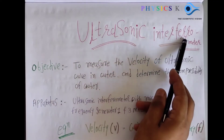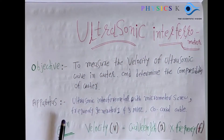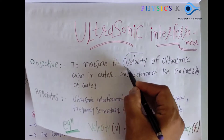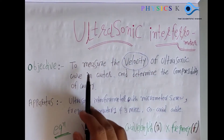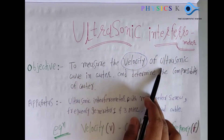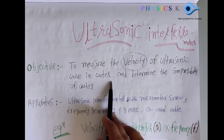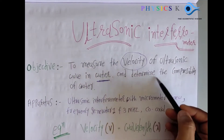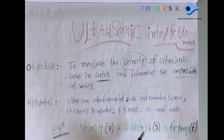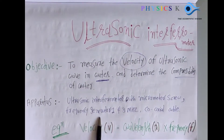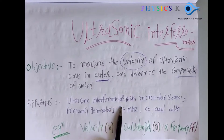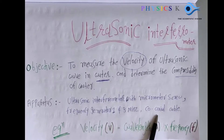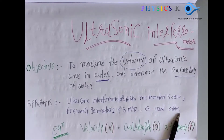The title is ultrasonic interferometer. Our objective is basically to measure the velocity of ultrasonic waves in water — that's why I filled water in this instrument — and to determine the compressibility of water. The apparatus used includes the ultrasonic interferometer with micrometer screw, a frequency generator, and a coaxial cable.